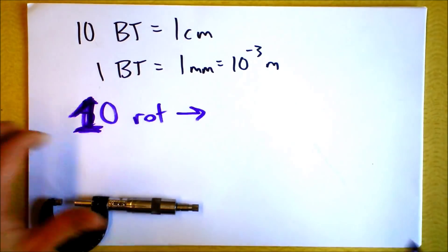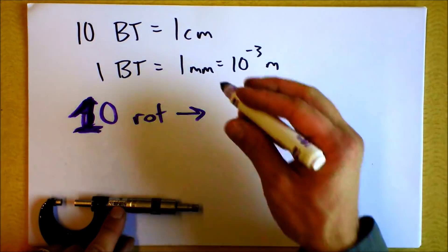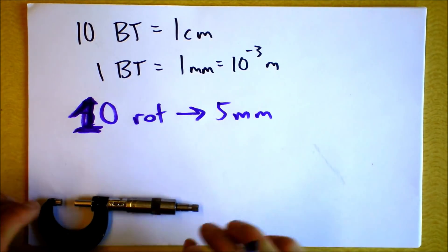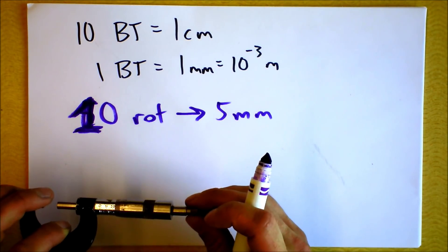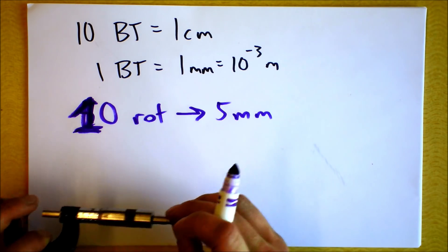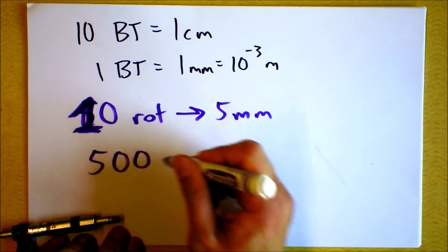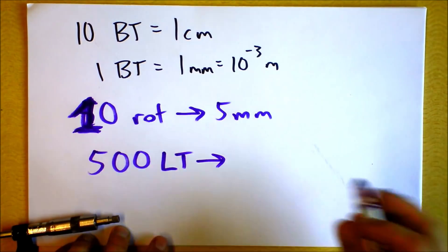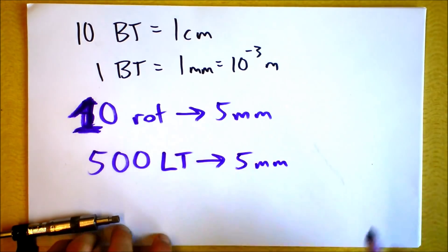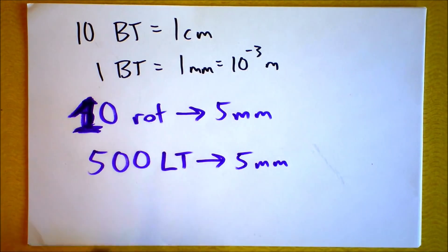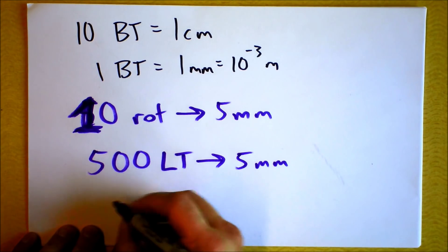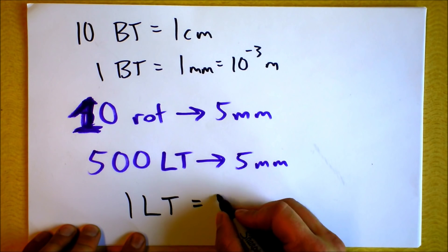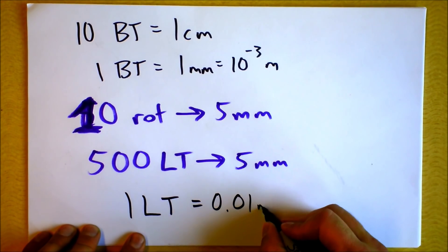Ten rotations gave me five millimeters. Ten rotations was 500 little ticks because every one of those rotations was 50 little ticks. So I can get a new equation that says 500 little ticks is five millimeters. And let's just divide everything by 500 and figure out how much a little tick is. A little tick, it looks like one little tick equals 0.01 millimeters, 10 to the negative fifth meters.